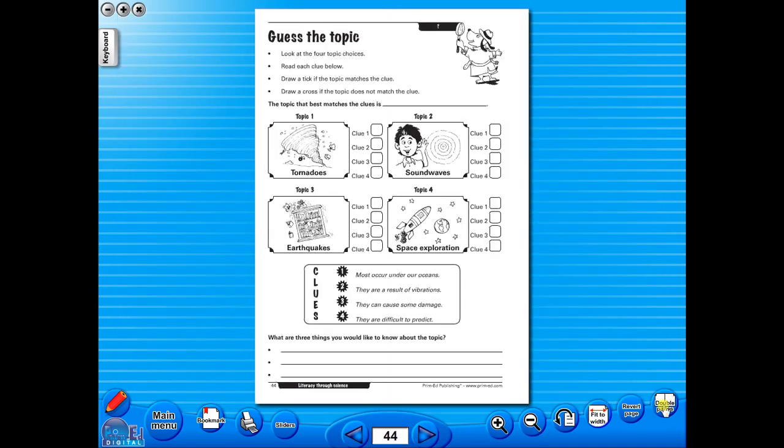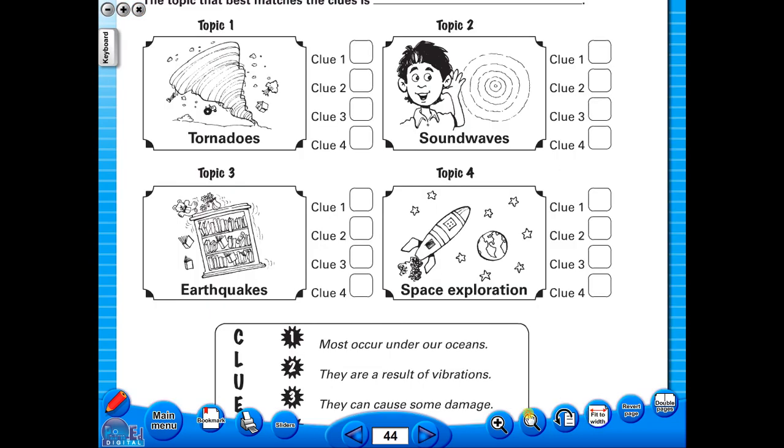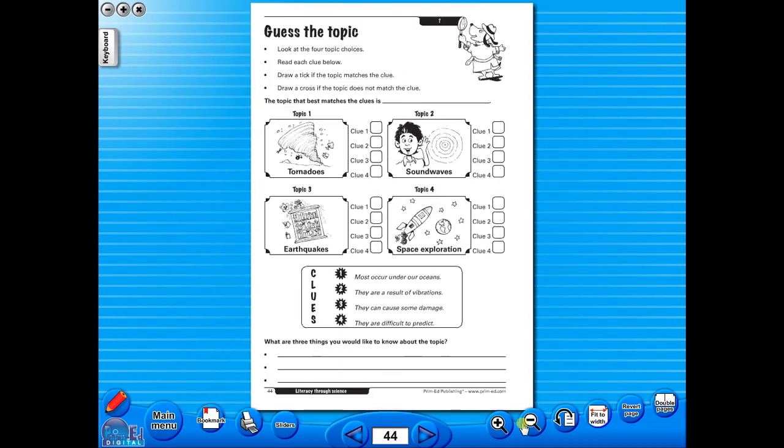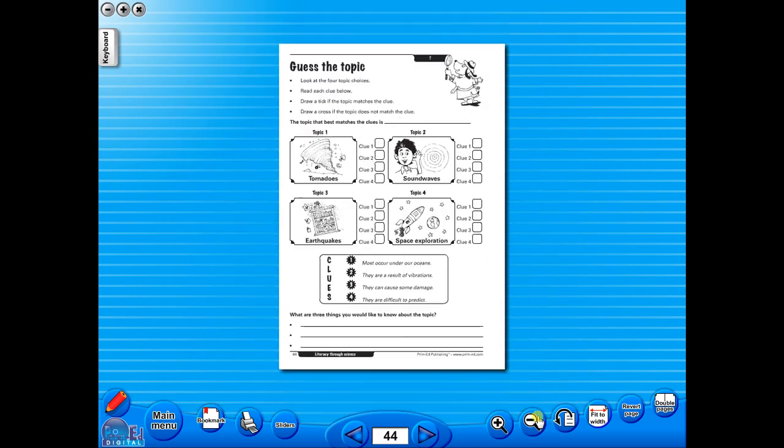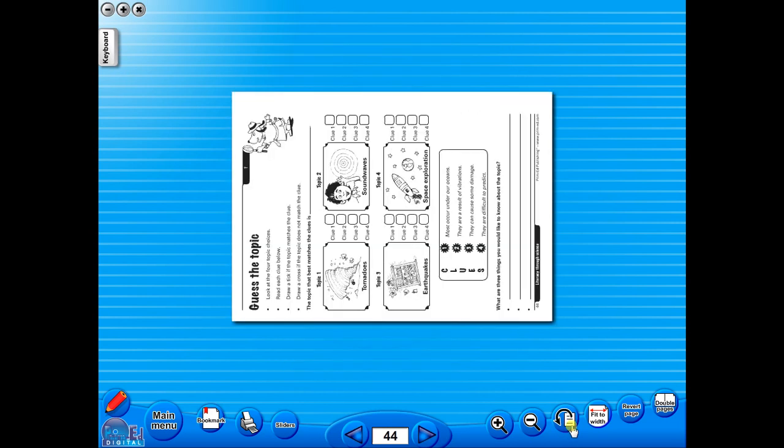The single page view may be used for the teacher to display the worksheet on the interactive whiteboard. To alter the size of the page on the screen or the interactive whiteboard, use the fit to width icon, or use the zoom in or zoom out icons. One can also use the rotate icon to display the worksheet in a horizontal position.